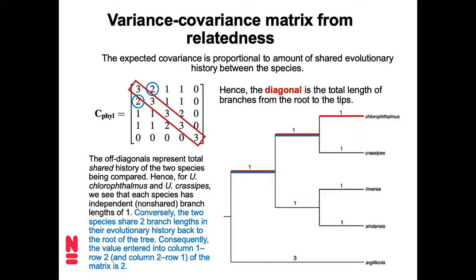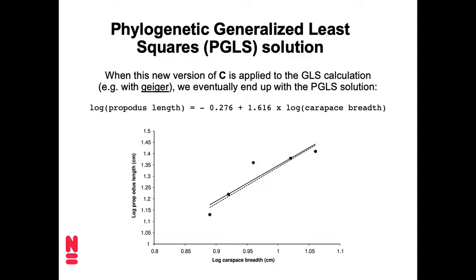This variance-covariance matrix is something you could work out yourself in code by traversing the tree. Later in the course I'll give examples of tree traversal algorithms — how you walk across a tree shape in code. That would be the way to build this VarCov matrix yourself and use it in any general R function for performing GLS. But that seems like a hassle, so there are also packages that do this for you. For example, in the package Geiger, you stick in a tree and your data and it figures out the values to put in the VarCov matrix, and that's how we can do the regression.